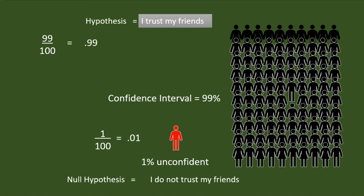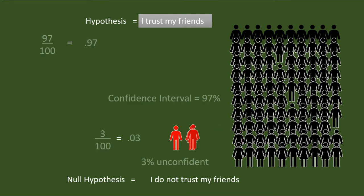Now, what if I started doubting 2 friends? The confidence interval reduces to 98%. Probability of accepting 'I do not trust my friends' increased to 2%. But I trust 98% of my friends, so I am standing with my statement. If I start doubting 3 out of my 100 friends, the confidence interval further reduces to 97%. Probability of accepting the null hypothesis is 3%. However, I trust 97% of my friends, so I am still standing with my statement: I trust my friends.